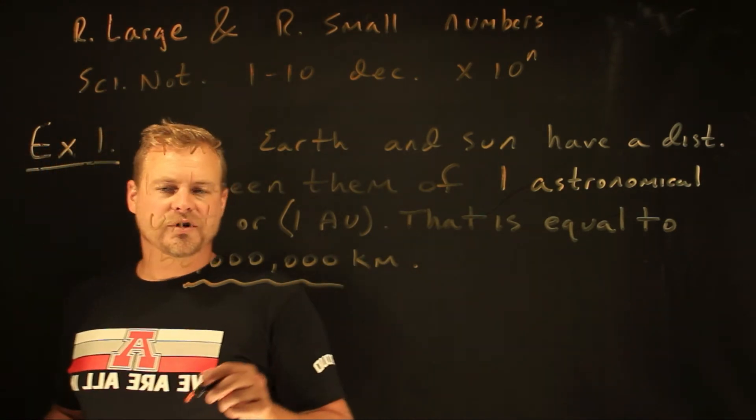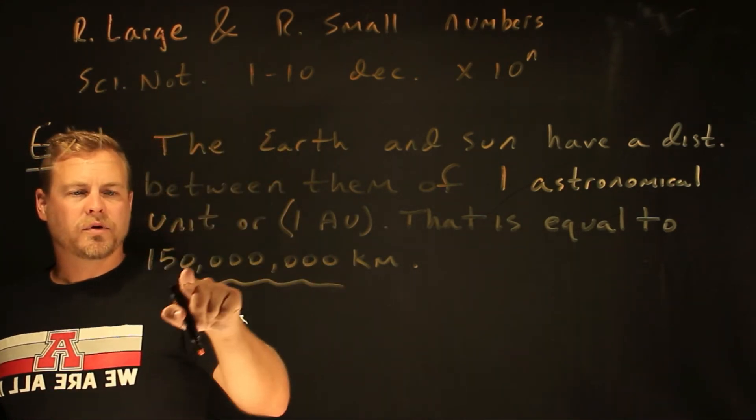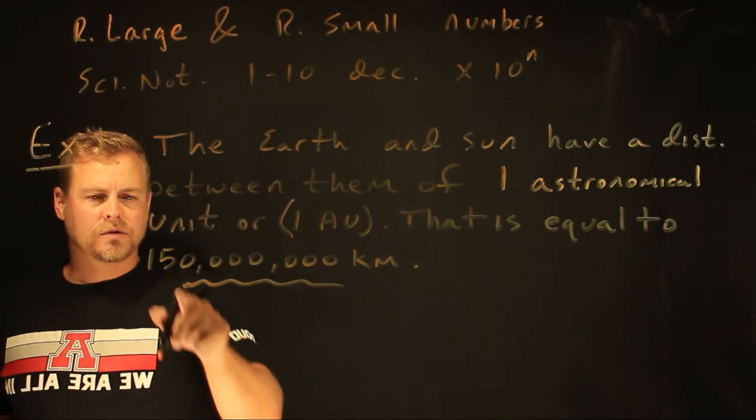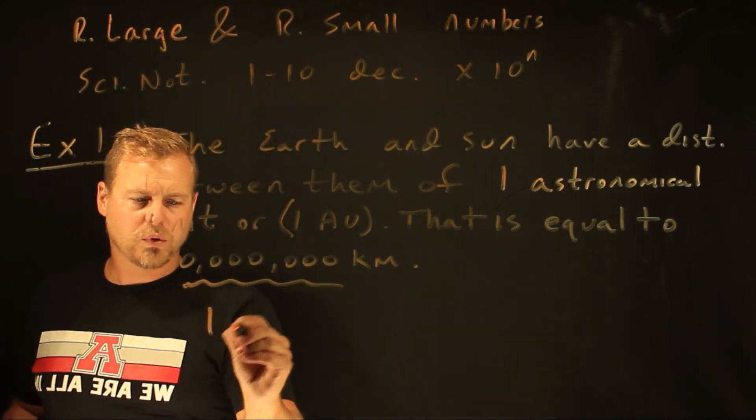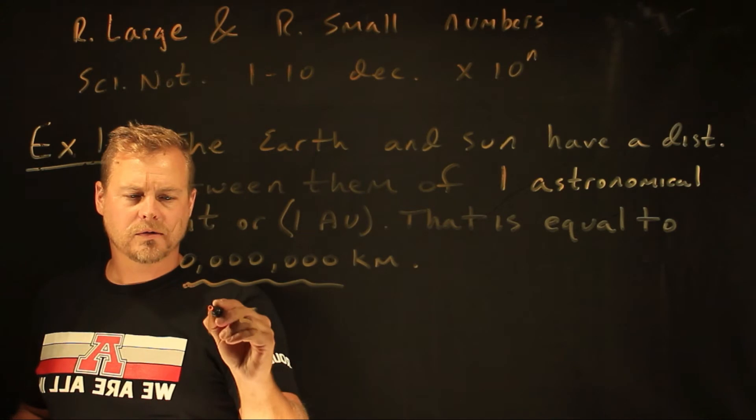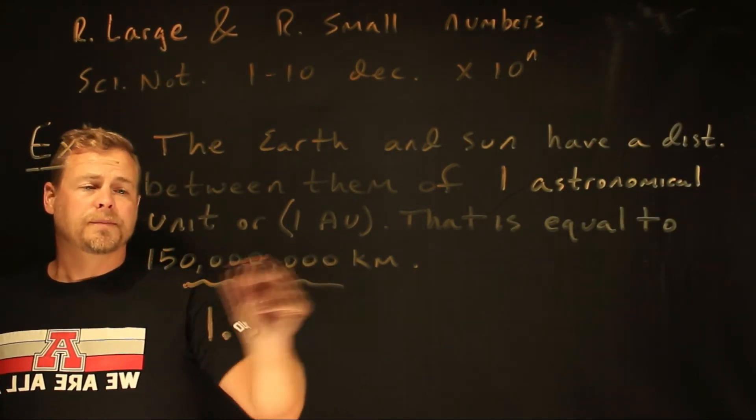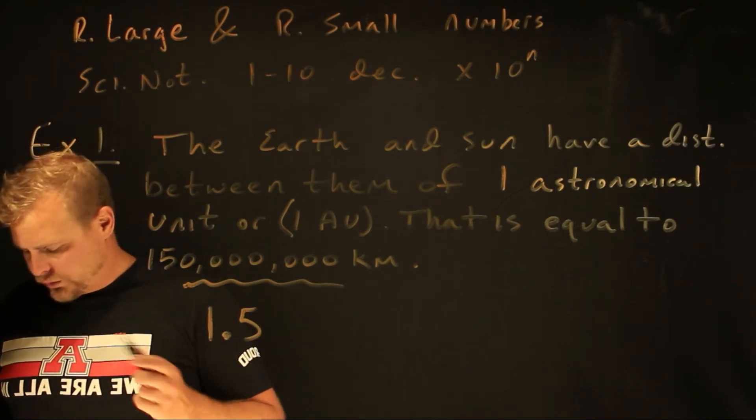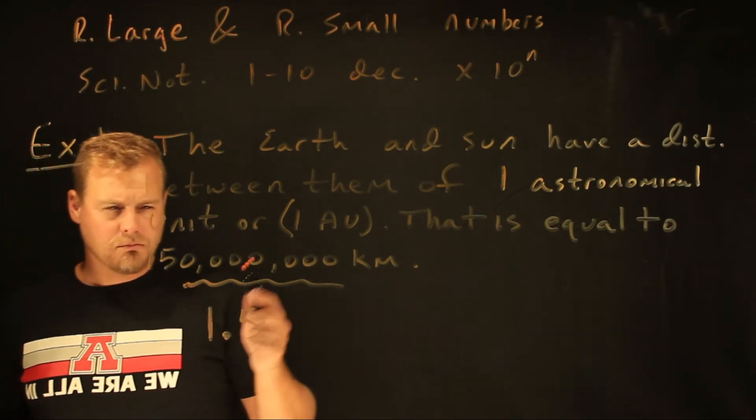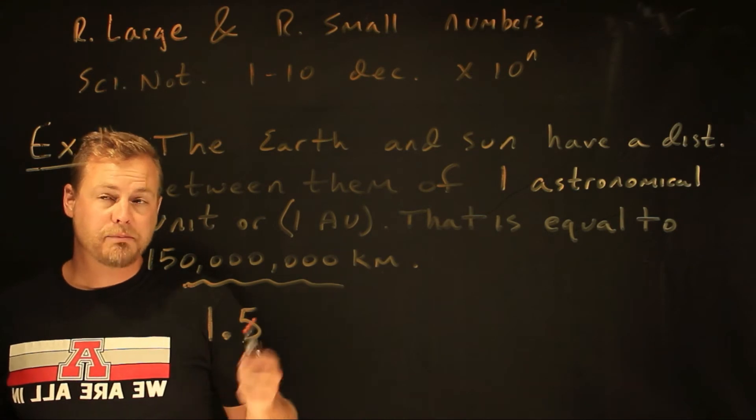I want to change it so that this number is between 1 and 10. And so the best way to do that is you're going to go 1.5. I'm going to take all those numbers and I'm going to make it equal to 1.5. And then what do you do with these zeros? Well,